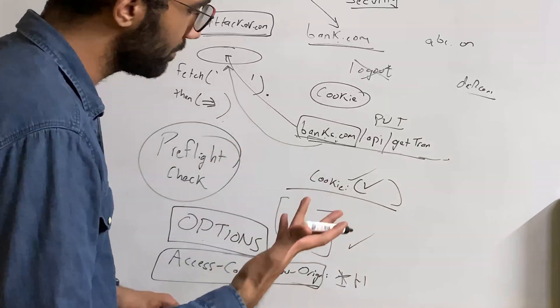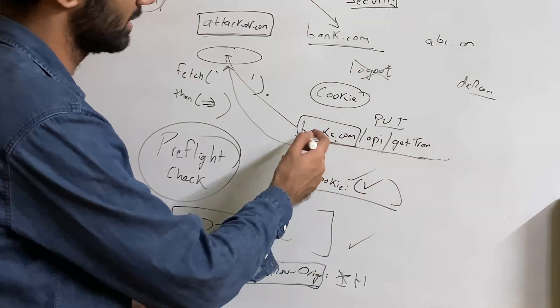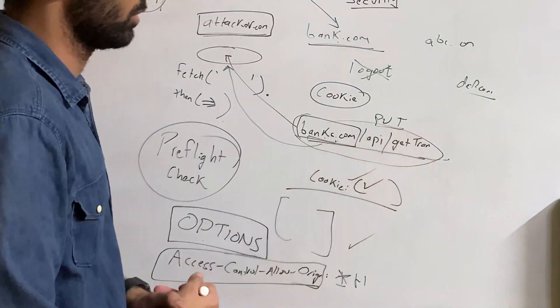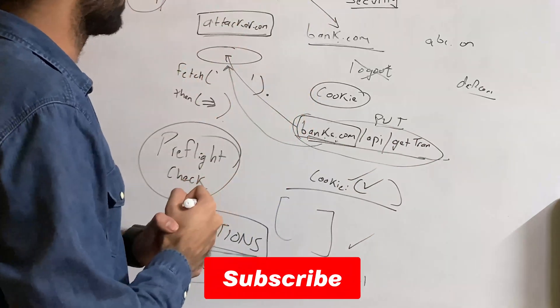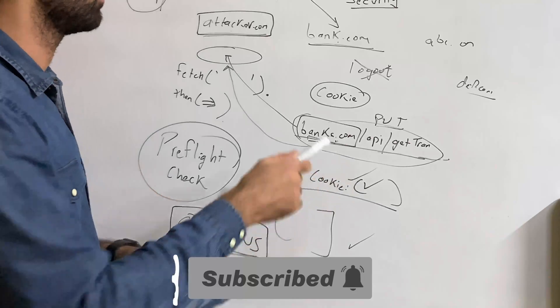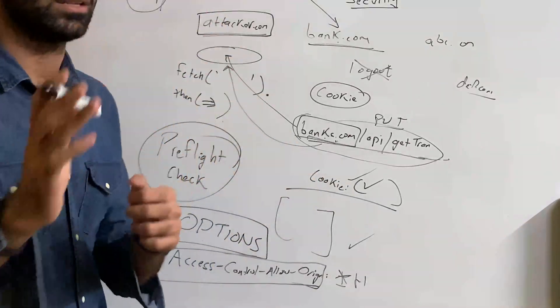Now you might be thinking that why can't I just make the same request on server? There is no CORS on server. You can copy and paste this on Node.js, but the critical piece you have to remember is that attacker.com is not visited by you. Attacker.com is visited by the victim.